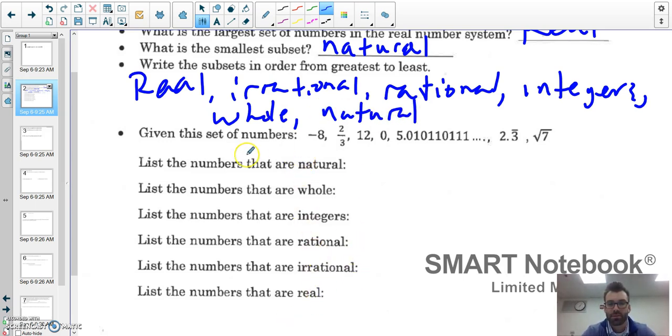Given this set of numbers, list the numbers that are natural. Remember natural are those counting numbers not including zero or any negative, so my only natural number here is 12. Whole numbers are the counting numbers including zero, so it will be 0 and 12.